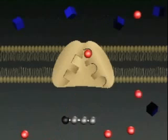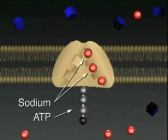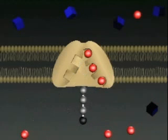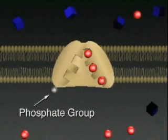Sodium inside the cell binds to the protein. The addition of a phosphate group from ATP changes the shape of the protein and the sodium is expelled.